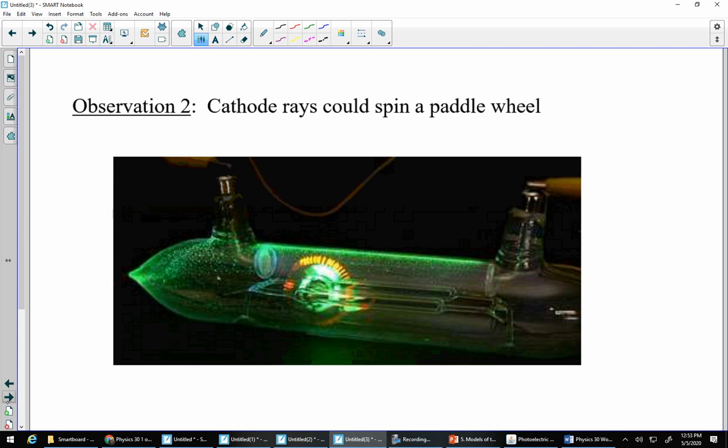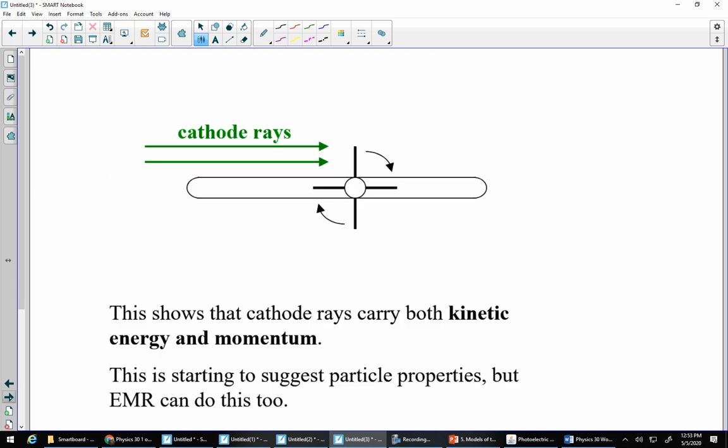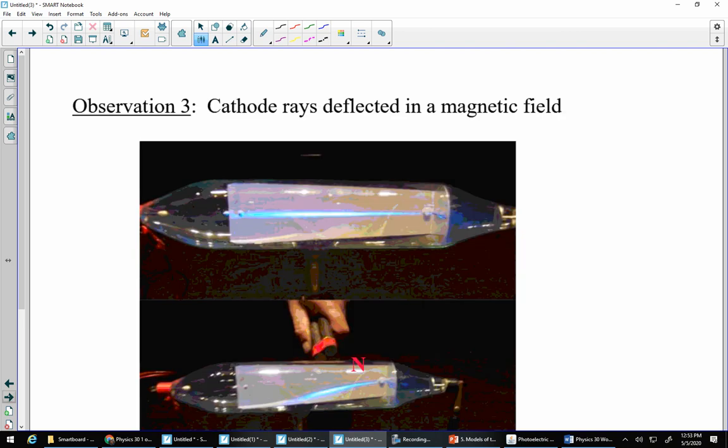So, people didn't know what these cathode rays were. Were they particles? Were they some form of EMR, like light? So, maybe it's just like a laser beam of EMR. Not that people had lasers back then. So, they started to investigate a little bit. It could cast shadows, right? So, it could absolutely cast shadows. Light does that, but particles would also do that. Like, if you're blasting particles at that cross, it would create, like, a space behind it where no particles would go. Right? Because light travels in straight lines, but hey, so does matter. It could spin a paddle wheel.